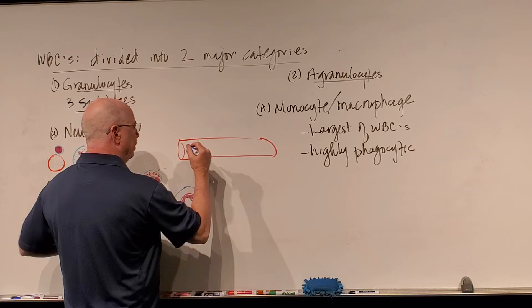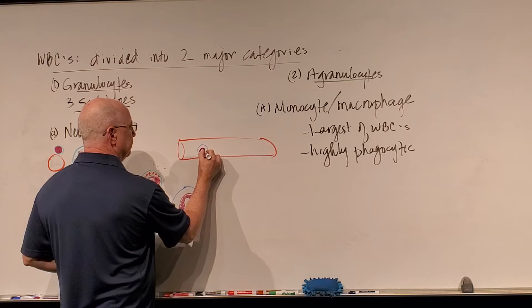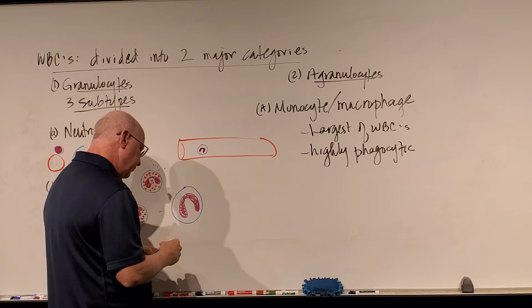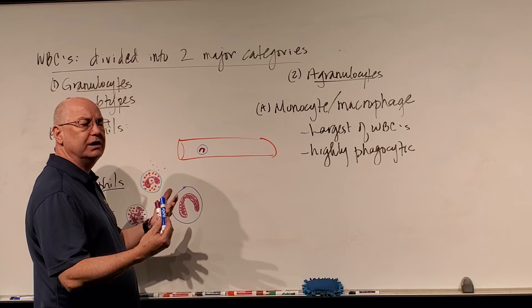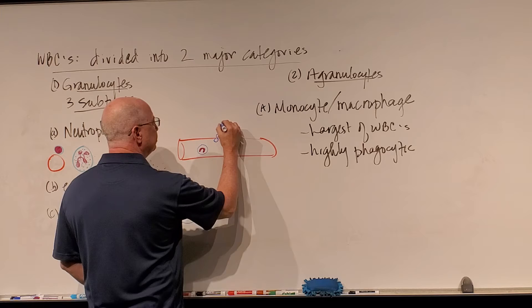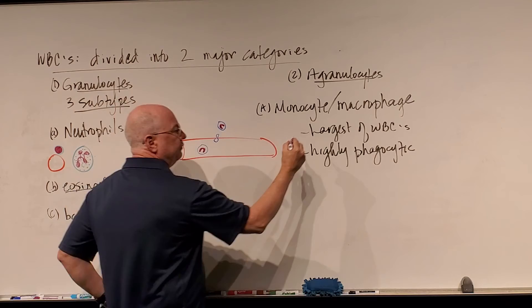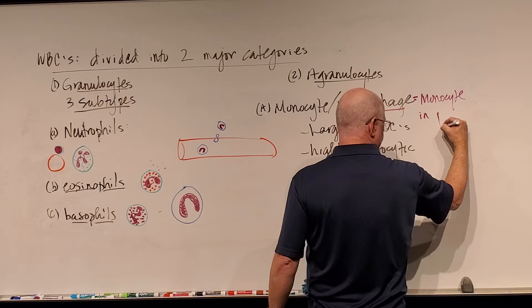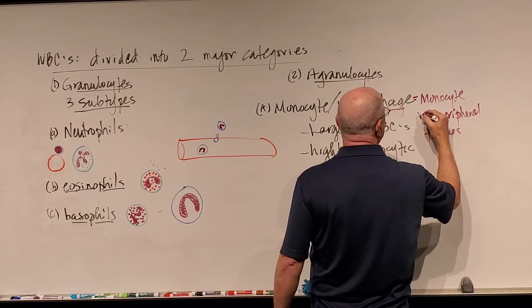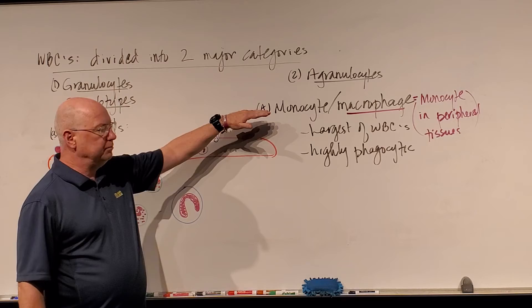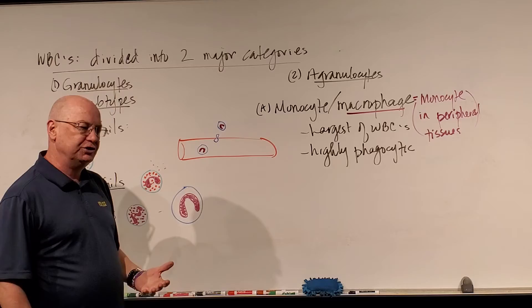As long as the monocyte lives in our bloodstream, it's still called a monocyte. But monocytes have the capability of squeezing between the junctions of the endothelial cells of capillaries, and they can literally squeeze themselves between those little gaps and pop out into peripheral tissues. A macrophage is a monocyte in peripheral tissue — we call them tissue macrophages. If the monocyte is still trapped in the bloodstream, we call it a monocyte; if it lives in the peripheral tissues, we call it a tissue macrophage.